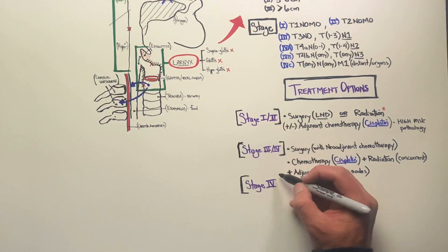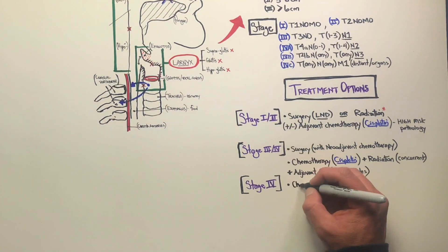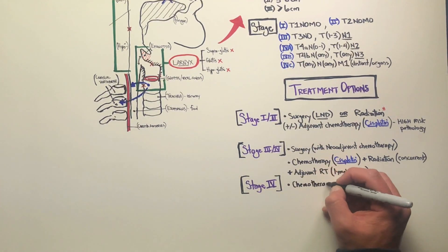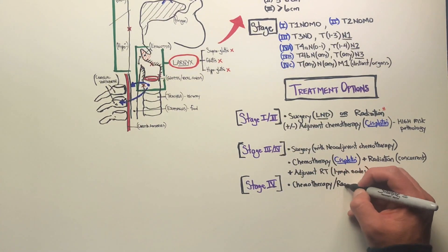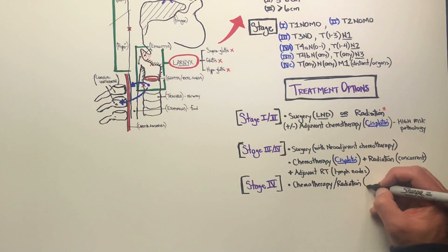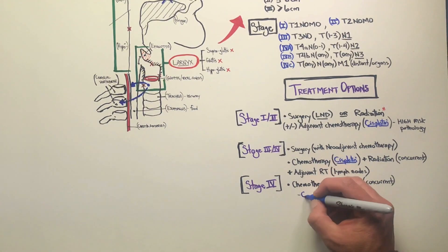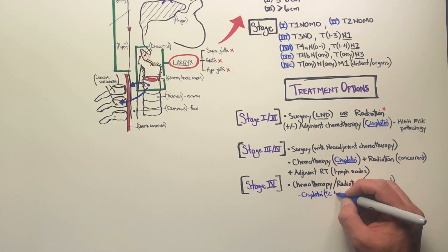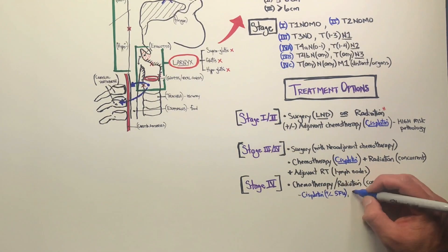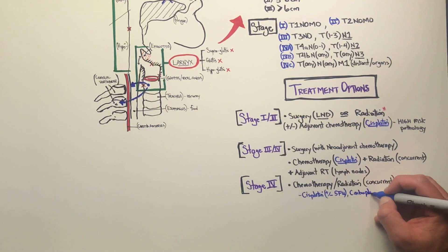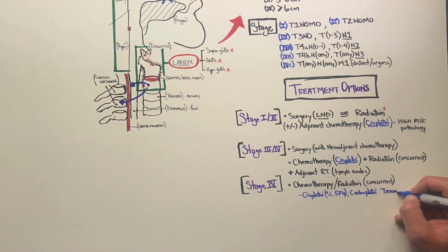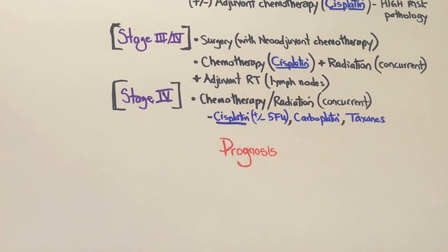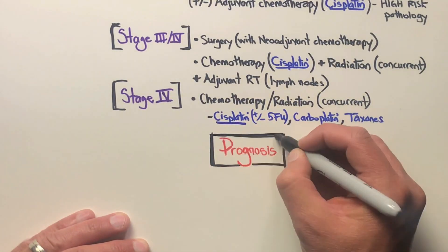For stage 4 cases — metastatic cancer — chemotherapy and radiation can be used concurrently as well. Cisplatin, along with other chemotherapies like 5-FU (5-fluorouracil), carboplatin, and taxane chemotherapies, can also be used in these advanced cases.